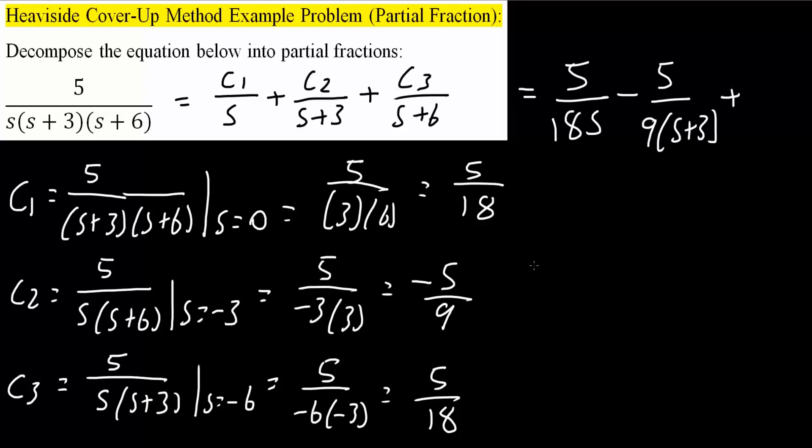Plus we have c3 is five over 18. So plus five over 18, and it would be s plus six. And that's all we need to do to solve this problem using Heaviside or cover-up method.